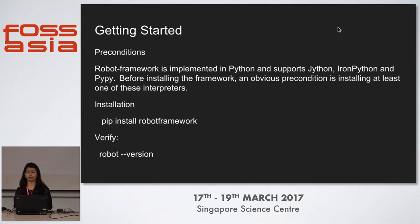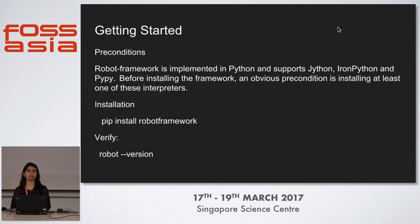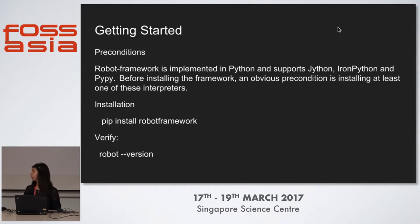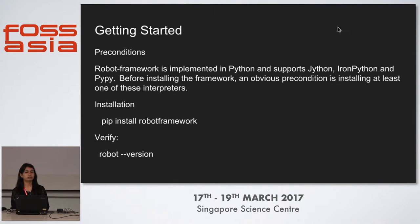Let's get started with the robot framework. The preconditions are: robot framework is implemented in Python and can be extended with Java, IronPython, or PyPy. Before installing, we need a Python interpreter. On Windows, you need to install Python; on Linux, Python is pre-installed. We can install robot framework using the simple command 'pip install robotframework' and verify it using 'robot --version'. Currently the latest version is Robot Framework 3.0, which supports Python 3.0.